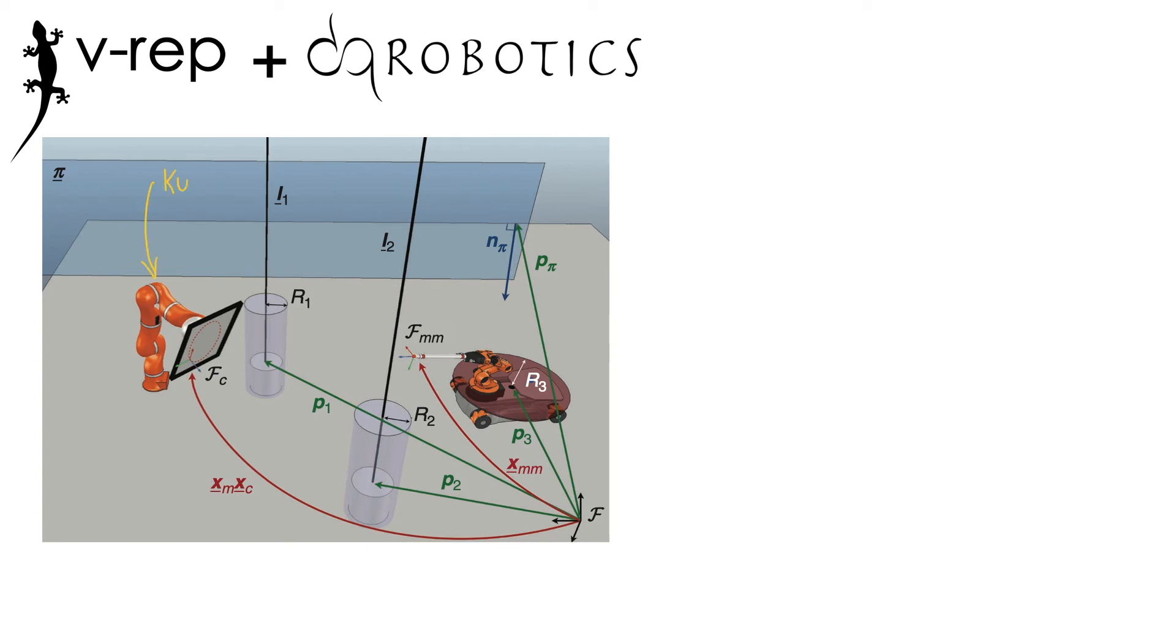In this simulation, we have a KUKA LBR manipulator with 7 degrees of freedom, a KUKA U-Bot, which is a mobile manipulator composed of a 5 degrees of freedom arm mounted on top of a holonomic base. There are two cylinders and a wall in the workspace. The goal is for the robots end-effectors to track prescribed trajectories while the robots avoid the obstacles.